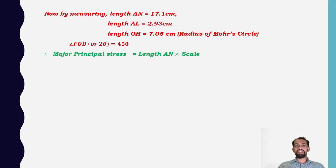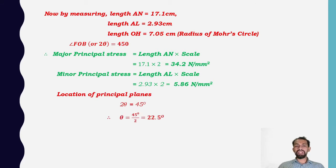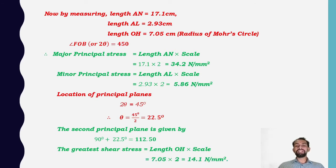Major principal stress = length of AN × scale = 17.2 × 2 = 34.2 N/mm². Minor principal stress = length of AL × scale = 2.93 × 2 = 5.86 N/mm². Location of principal planes: 2θ = 45°, therefore θ = 22.5°; the second principal plane is at 90° + 22.5° = 112.5°. Greatest shear stress = length of OH × scale = 7.05 × 2 = 14.1 N/mm².